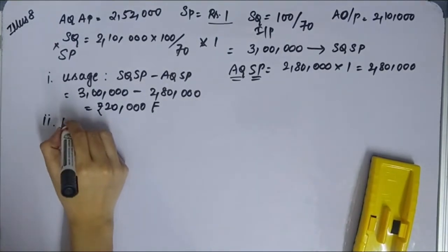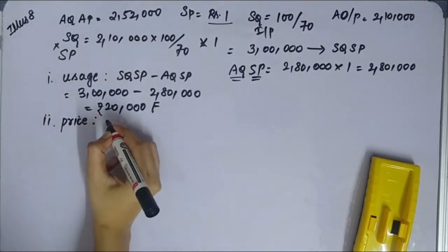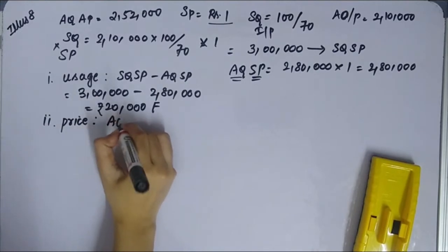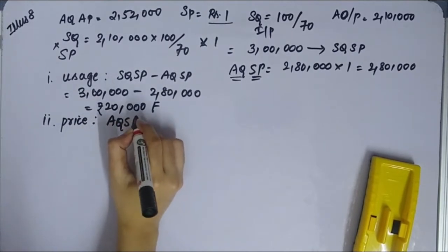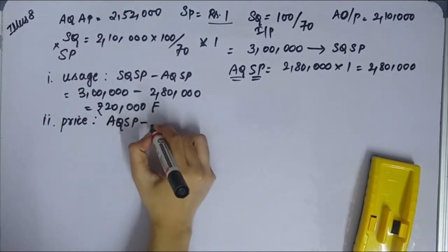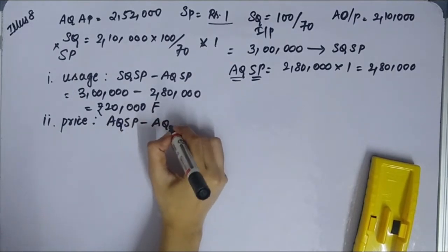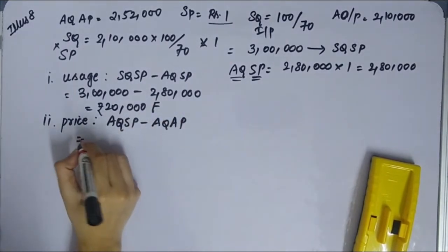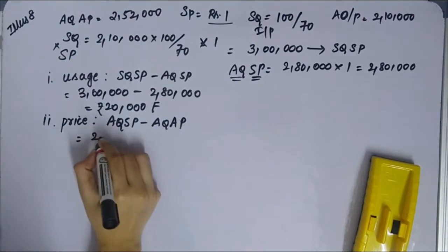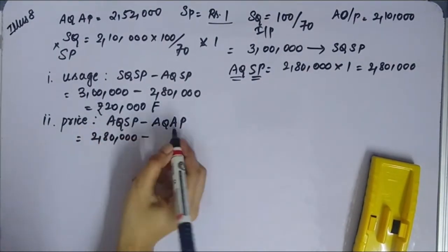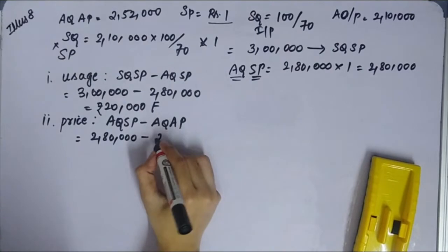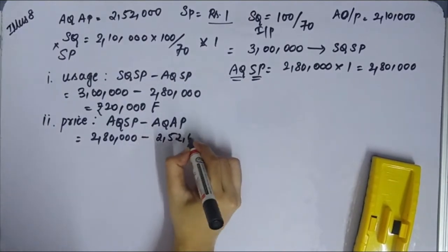Second one is price variance. Price variance is AQSP minus AQAP. AQSP is 2,80,000. AQAP is 2,52,000.